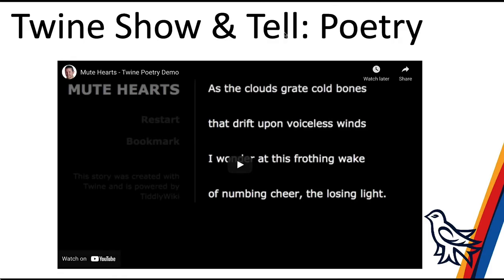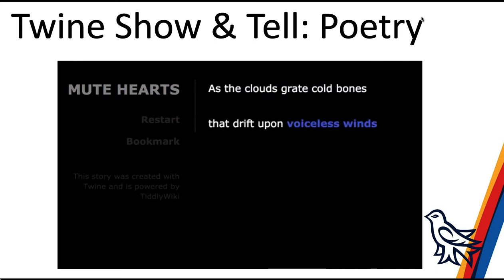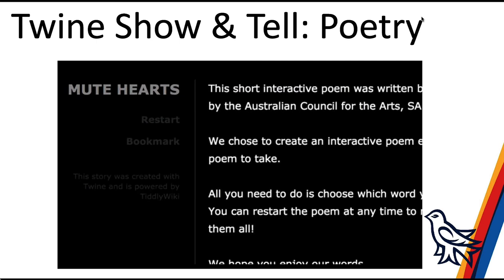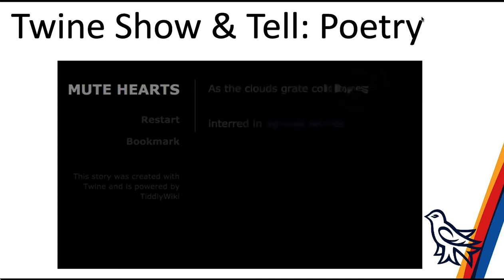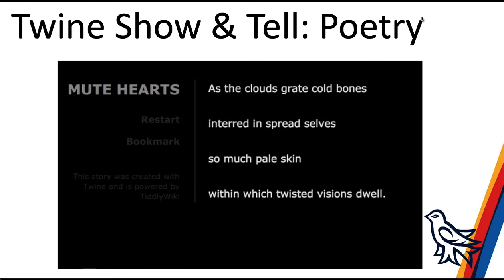Here's an example of a Twine poem. The way it works is each line has two words that you can click on, and depending on which word you click on, you'll get a different line coming up next in the poem. Here we've gone through one version of the poem. If I refresh the story and click a different line, the poem is completely different than the previous one — other than the first line. Just another interesting use case for Twine that might not be obvious.